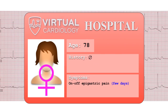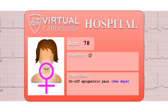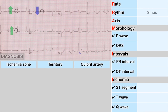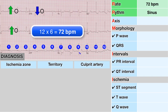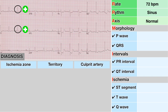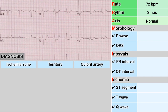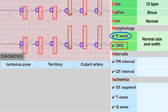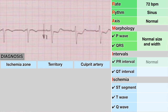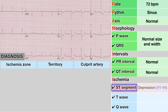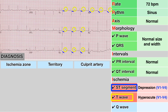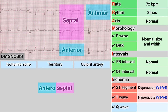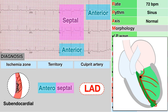This is an EKG of a 78-year-old lady with no past medical history who presented with a few days of on-and-off epigastric pain. There is sinus rhythm at a rate of about 72 beats per minute. The axis is normal as it is positive in leads 1 and 2. The P wave and QRS complex are of normal size and width. The PR is normal and the QT seems normal. There is marked ST depression and T wave changes in leads V1 to V4, consistent with anteroseptal ischemia, again due to an LAD subtotal occlusion.